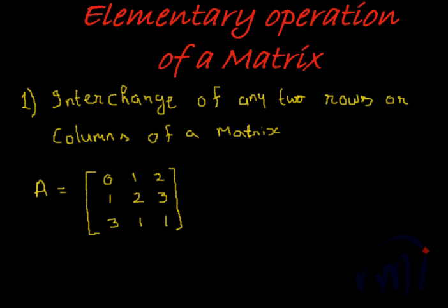What elementary operations means is there are three sets of operations that, when done on a matrix, do not change the nature of the matrix. When I say the nature of the matrix does not change, the nature of the equations underlying the matrix does not change if we do any of these elementary operations.